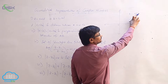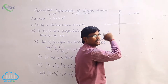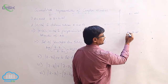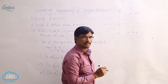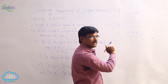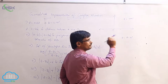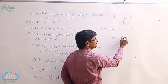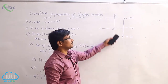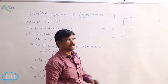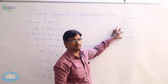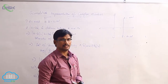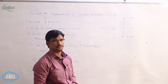Since a is the real part and b is the imaginary part, both are positive, z is in the first quadrant. Now z-bar equals a minus bi — a is real and b is imaginary but with a negative sign, so it is in the fourth quadrant. This means z-bar is the mirror image of z with respect to the real axis; the length is the same but in the opposite direction.